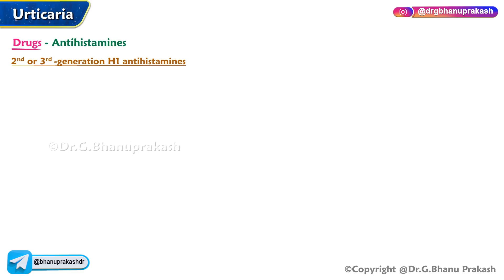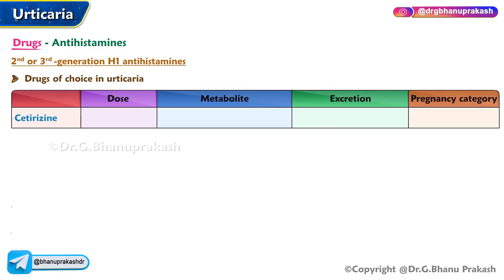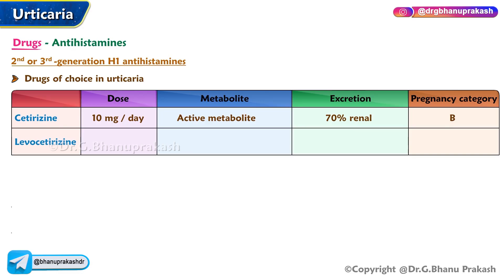Second- or third-generation H1 antihistamines are the drugs of choice in the treatment of urticaria. Cetirizine dose: 10 milligrams per day; it is an active metabolite, approximately 70% renal excretion, pregnancy category B. Levocetirizine dose: 5 milligrams; it is an active metabolite of cetirizine, mainly renal excretion, pregnancy category B.